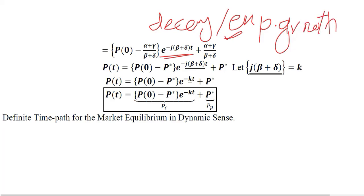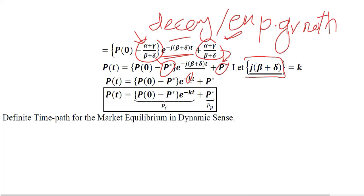To make the exponential term more compact, we substitute k for J times (beta plus delta), so instead of writing J(β+δ) we write only k. We also observe that the cluster of parameters alpha, gamma, delta, and beta actually equals the equilibrium price, so we write the equilibrium price instead of that cluster. The expression is now more compact: this is the time path of the equilibrium price, with the equilibrium value as the particular integral and the complementary function containing the exponential part.